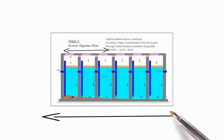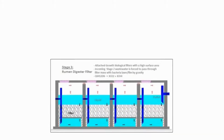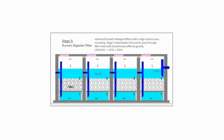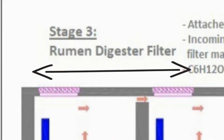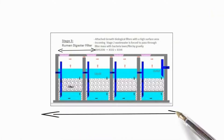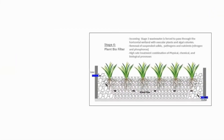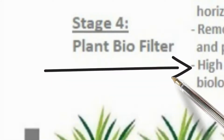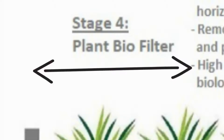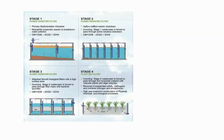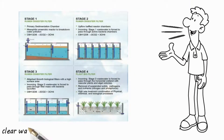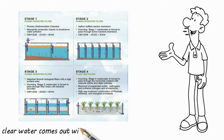Next, by gravity, the water moves to the third stage rumen digester filter. Next, by gravity, the water moves to the fourth stage — the plant biofilter. Sewage flows through all four stages and clear water comes out without using any power or chemicals.